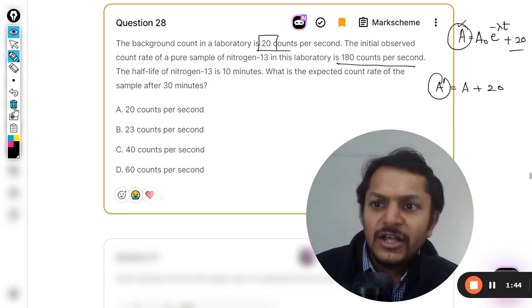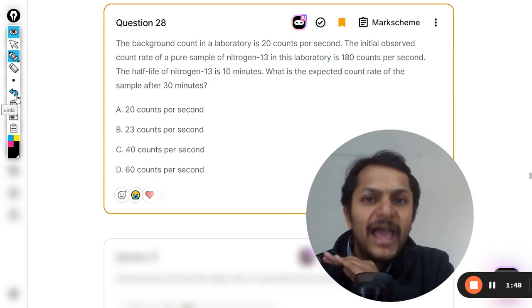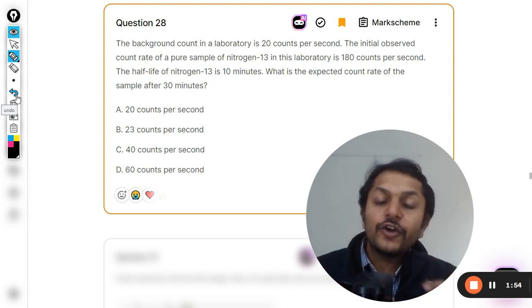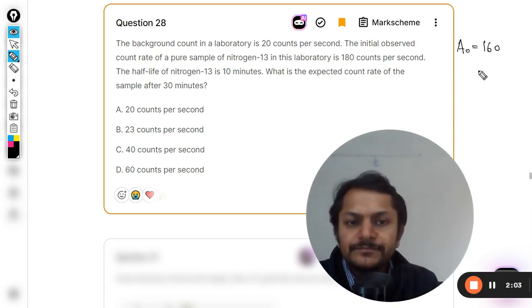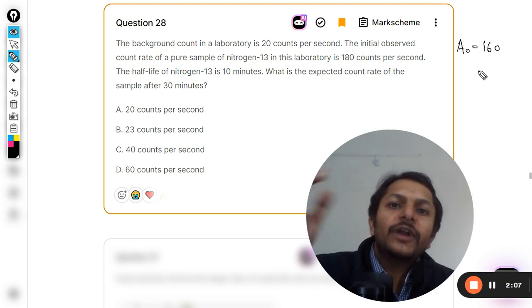Is it clear? First of all, to get the actual initial activity of the sample, you need to subtract the background count, that is 20, from the total measurement which is 180. So actually, A₀ is 180 minus 20, that will be 160 counts per second.